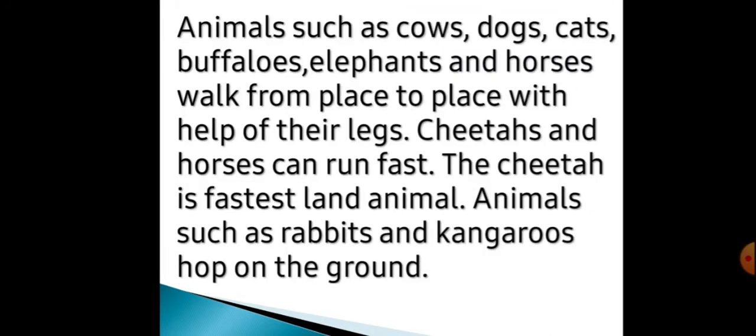Animals such as cows, dogs, cats, buffaloes, elephants and horses walk from place to place with the help of their legs. Jo cows, dogs, cats, buffaloes, elephants aur horse hain, woh sab apne legs se ek jagah se doosri jagah ja sakte hain. Cheetah aur horse woh ekdam fast fast run kar sakte hain. The cheetah is the fastest land animal.